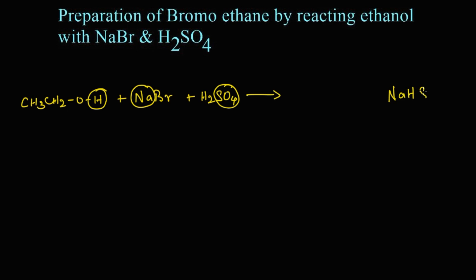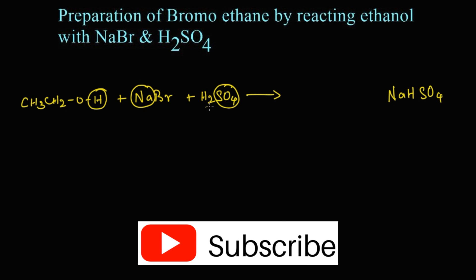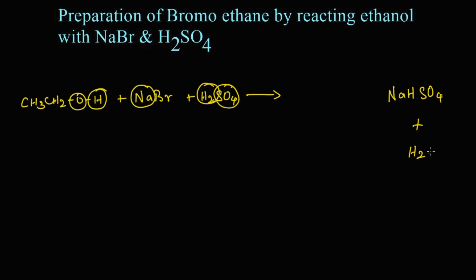The remaining hydrogen and oxygen leave as a water molecule (H2O). The bromine gets attached to the ethyl group, forming ethyl bromide or bromoethane, which is a haloalkane.